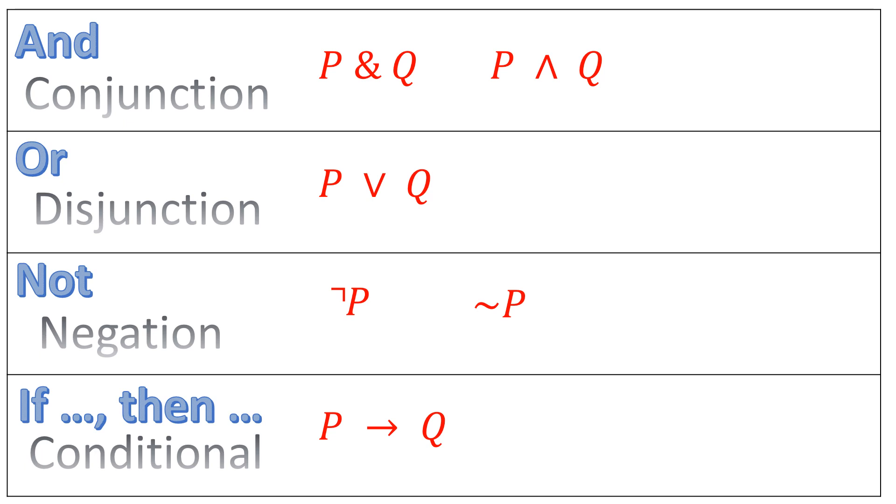In the conjunction, we're dealing with an and statement. We symbolize and either with an ampersand or, alternatively, with a wedge. So we have the molecular sentence formed with two atomic sentences.